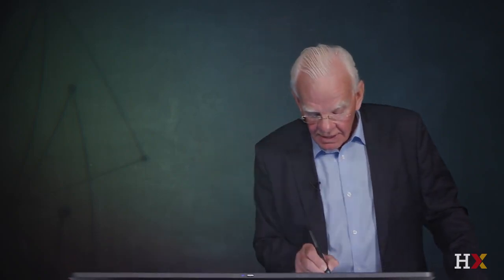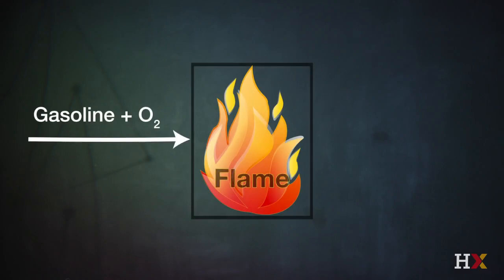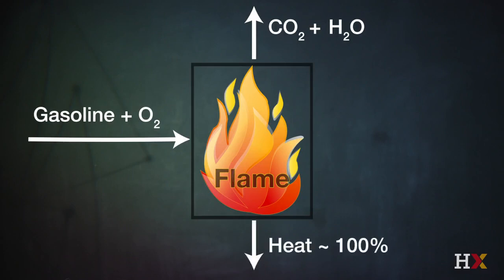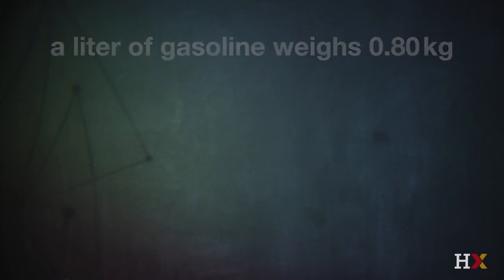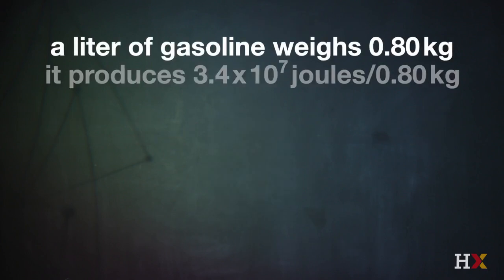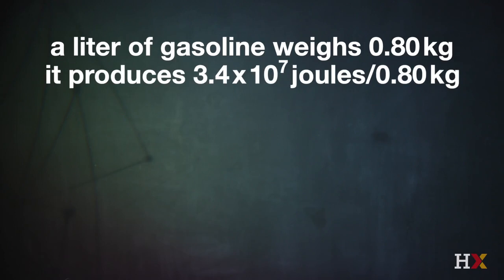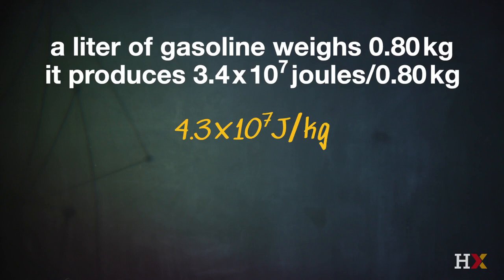We've made a very important measurement. We can sketch that physical entity by recognizing that we're adding gasoline and oxygen to the flame, producing CO₂ and water, but all of that energy goes into heat — there's no useful work coming out. A liter of gasoline weighs 0.8 kilograms, producing 3.4 × 10⁷ joules per 0.8 kilograms, which equals 4.3 × 10⁷ joules of energy per kilogram of fuel.